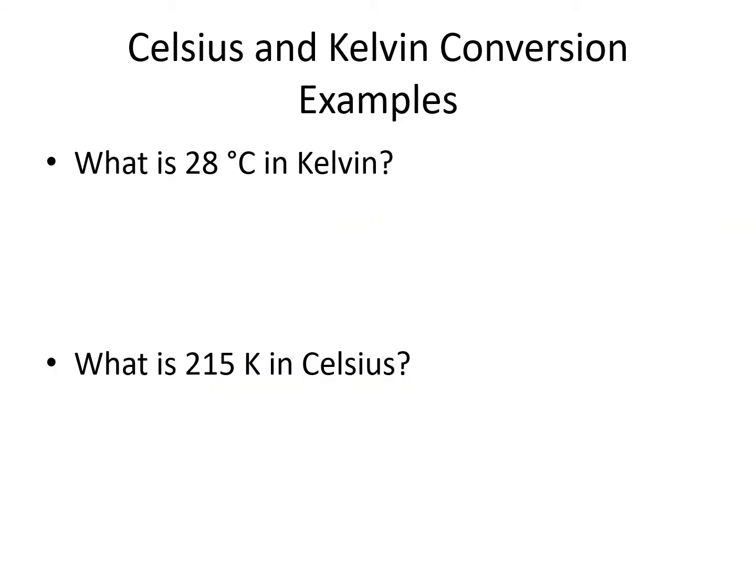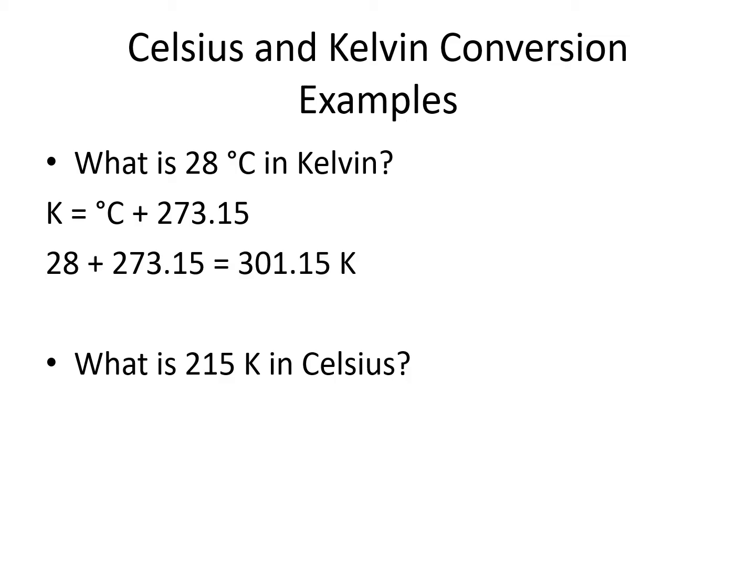In our first example, we are converting from Celsius to Kelvin. We use our equation as written and plug in our known degrees Celsius where it says degrees Celsius in the equation. 28 plus 273.15 gives us 301.15 Kelvin.